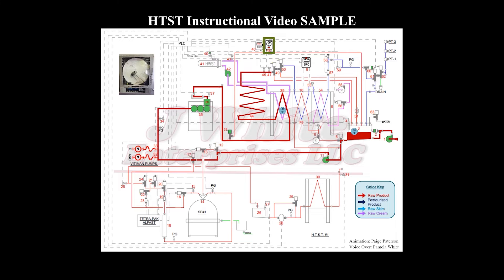When the cut-in temperature is reached, the flow-divert valve will be energized, shifting it into forward flow. When it is shifted fully into forward flow, the green light on the safety thermal limit recorder will be on and the event pen on the outer edge of the recording chart will move up,